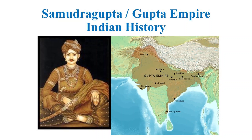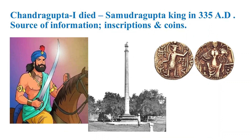This video lecture is about Samudragupta of the Gupta Empire, its rule and history in the Indian subcontinent. In 335 AD, Chandragupta I died and after his death, Samudragupta became the king or ruler of the Gupta Empire.